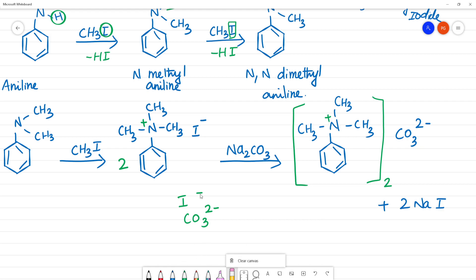We will name it. First, this is N, N, N. There are 3 N, there are 3 methyl group substituents. If we have carbon, we will use 1, 2, 3. If we have nitrogen, we will use N.